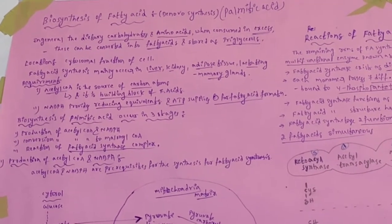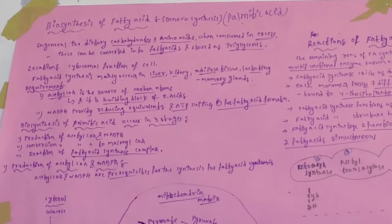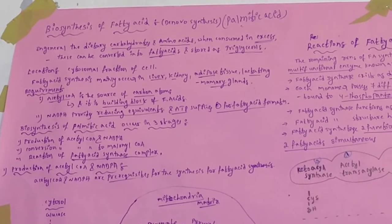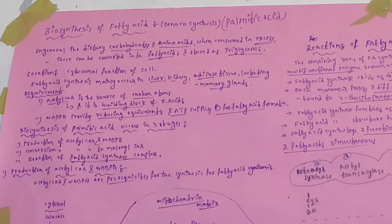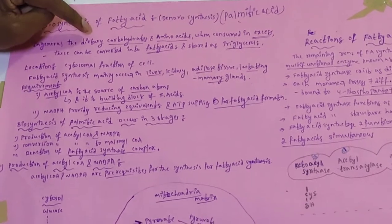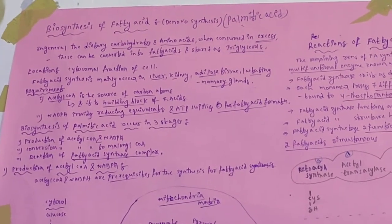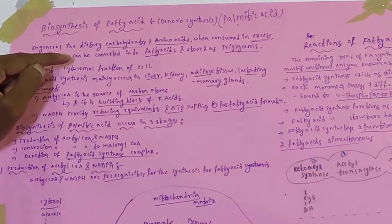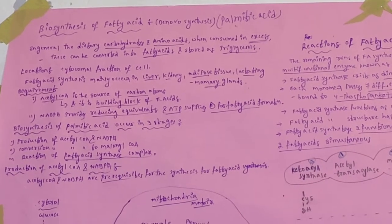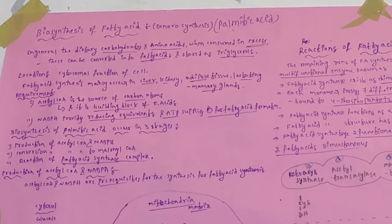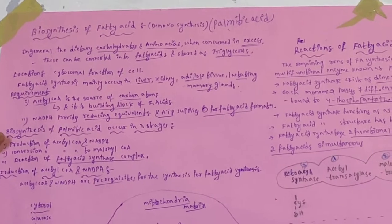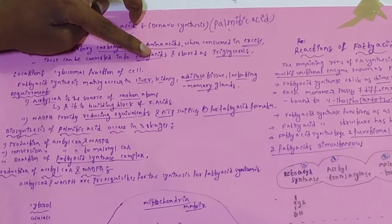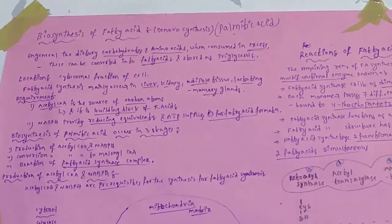In this class we are going to discuss the biosynthesis of palmitic acid, that is the biosynthesis of fatty acid. In general, the dietary carbohydrates and amino acids, if taken in excess, can be converted into fatty acids and stored as triglycerides.